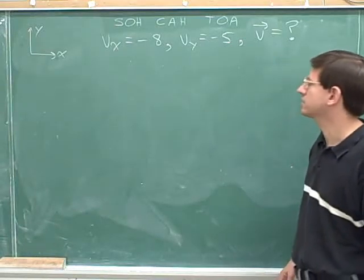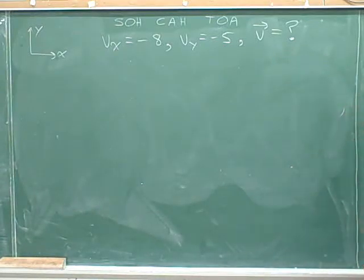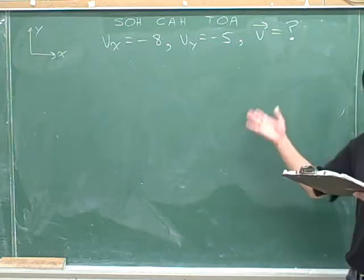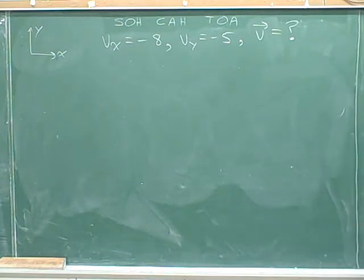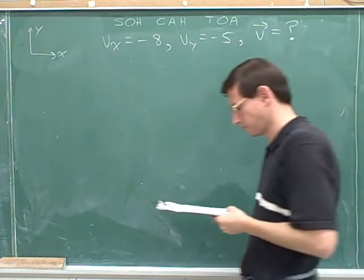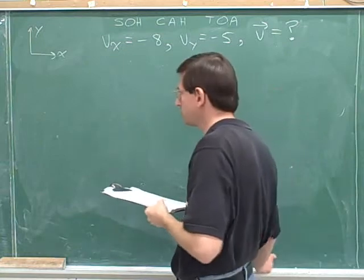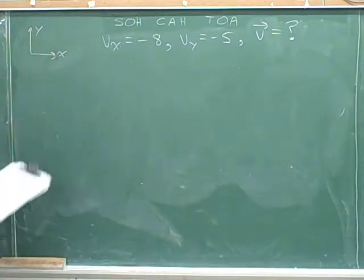V sub x is negative 8 and V sub y is negative 5. Let's find the overall vector. Please pause the video and give this problem a shot. You should start by writing down your positive axes.